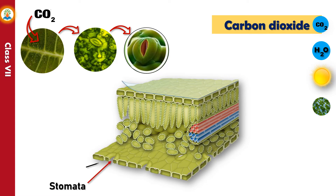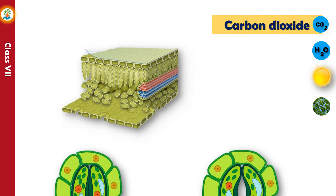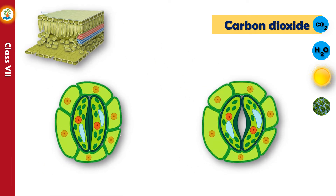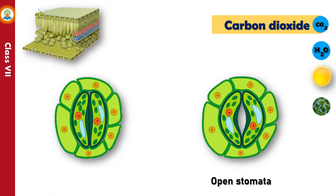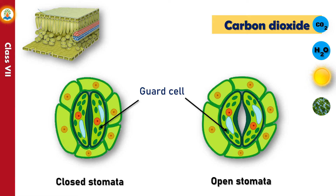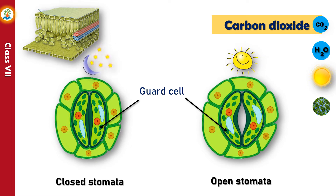Each stoma is surrounded by two guard cells. These guard cells control the opening and closing of stomata. Stomata open when the guard cells become turgid (swollen) and close when guard cells become loose due to water loss. Stomata are mostly open during the daytime and close at night.